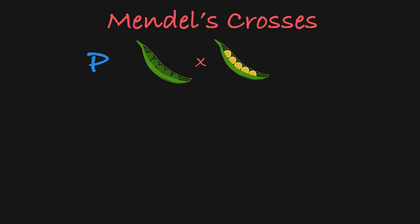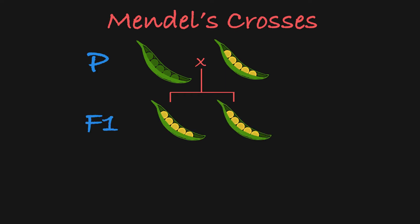When Mendel crossed the P generation plants together, their offspring were called the F1 generation. This F1 generation contained only plants with yellow peas.